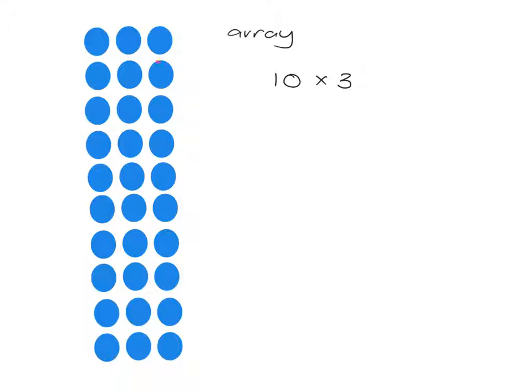All right. We've got 1, 2, 3, 4, 5, 6, 7, 8, 9, 10 lots of 3. And because we are very good at multiplying by 3, we know immediately that the answer to this is 30. So we know immediately that what I've got here is 30 dots.